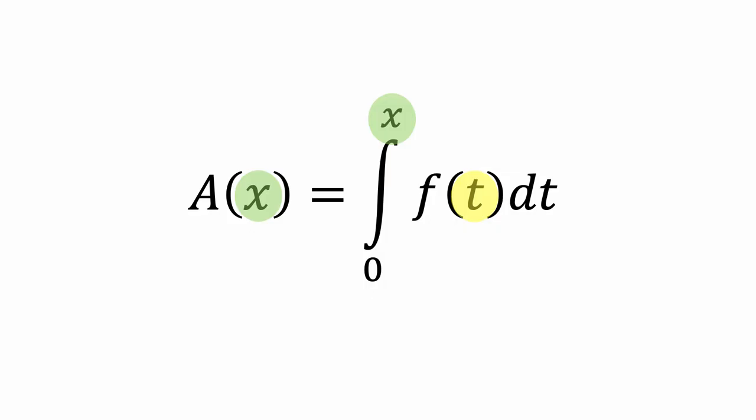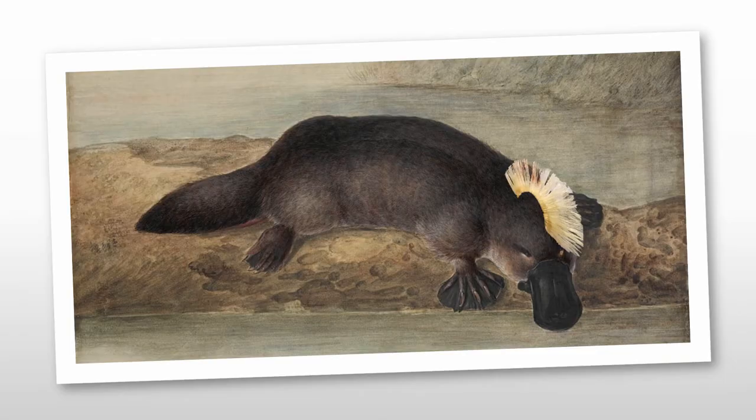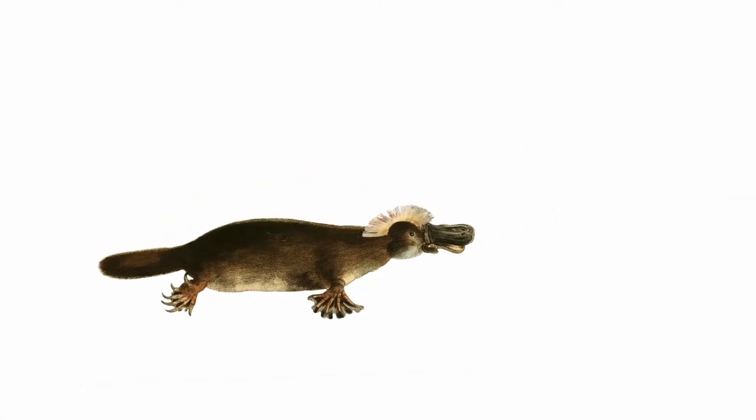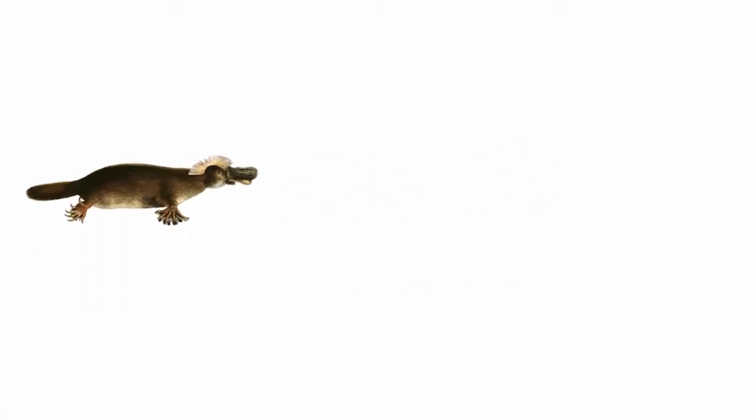To start thinking about this, let's look at the behavior of an interesting creature. The crested platypus is a creature that lives in and around the deep lakes of New York State. When it is ready to mate, the male crested platypus enacts an interesting dance. As it dances, the platypus rapidly waves its crest, which causes it to levitate off the ground.